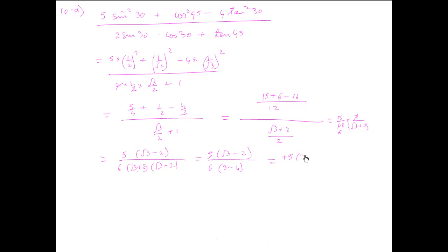5 times 2 minus root 3 upon 6. This would be the rationalized denominator answer in simplest form.